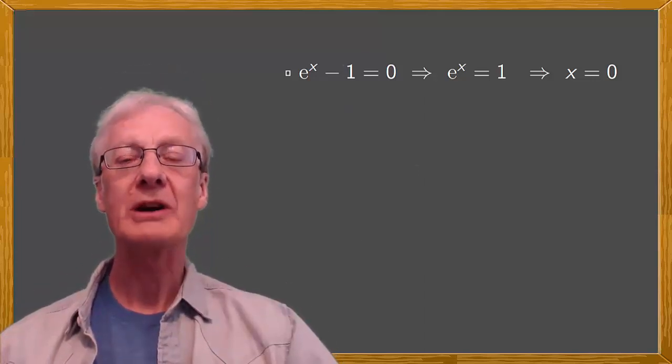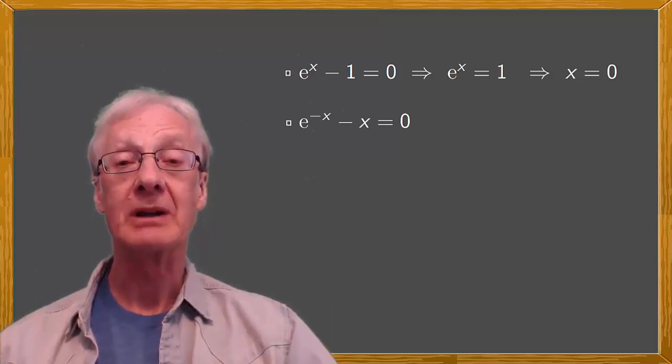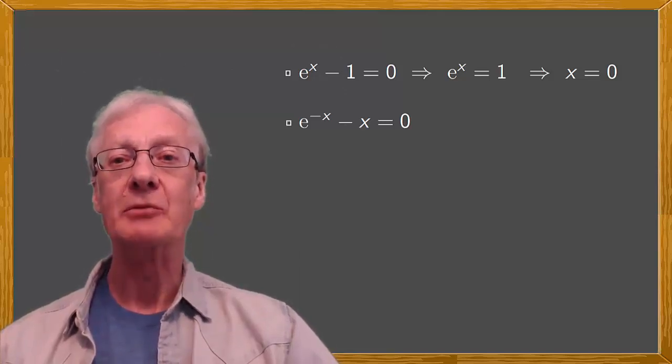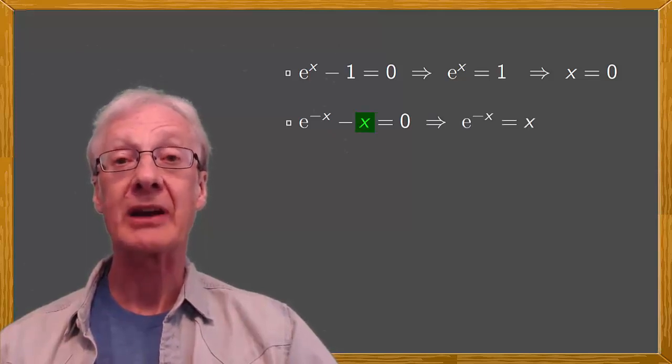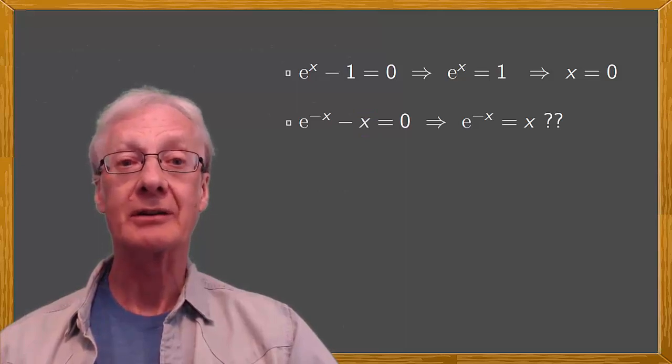But what about the equation e to the minus x minus x equals 0? It looks straightforward enough, doesn't it? So let's just do the same thing and move the x to the right hand side, so we have e to the minus x equals x. Can you see any values of x that are a solution?